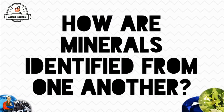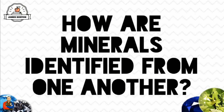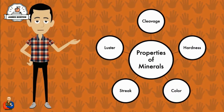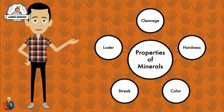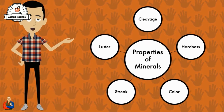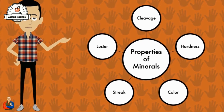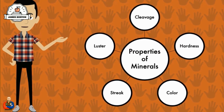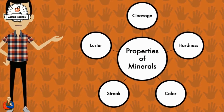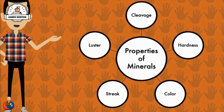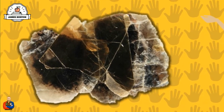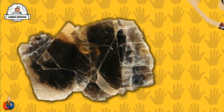A good question to ask right now is: how are minerals identified from one another? If we're going to accurately identify a mineral, we need to look at its properties. There are five distinct properties that many geologists use to identify minerals. They are cleavage, hardness, color, streak, and luster.